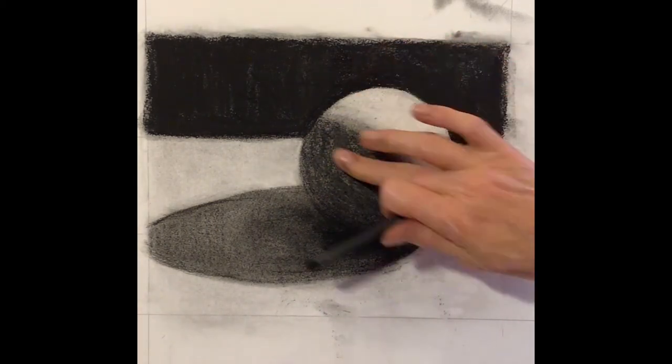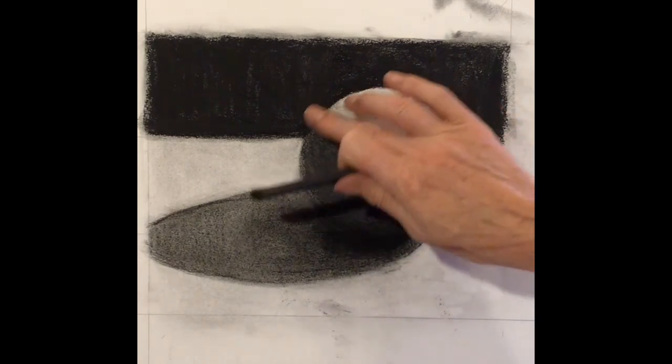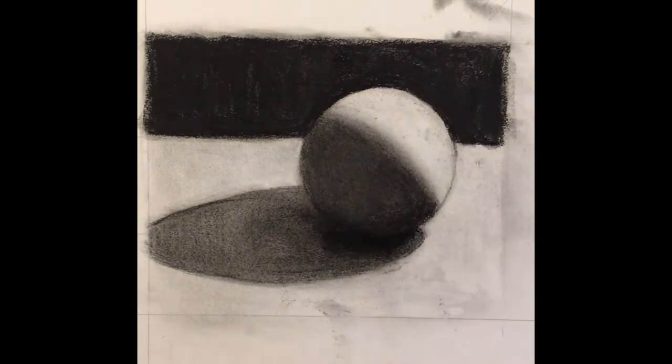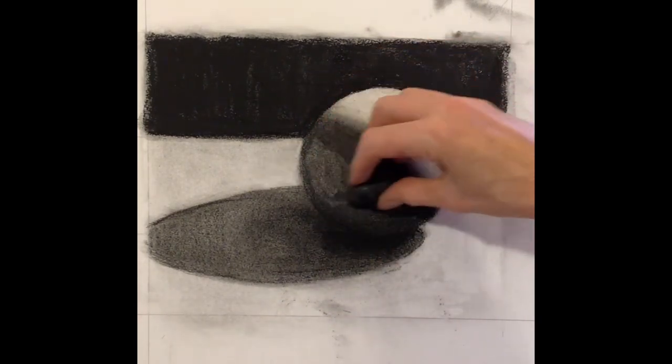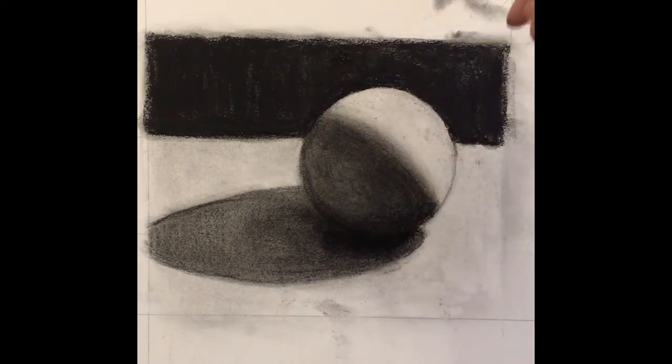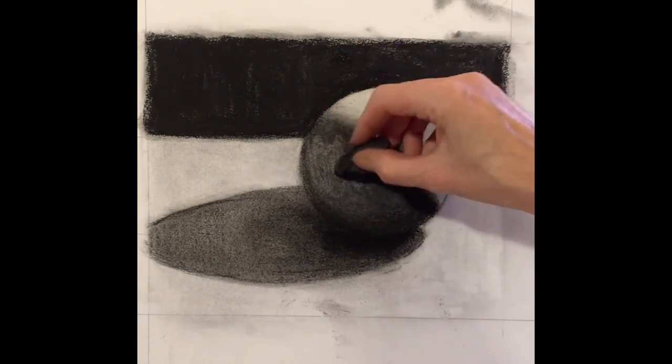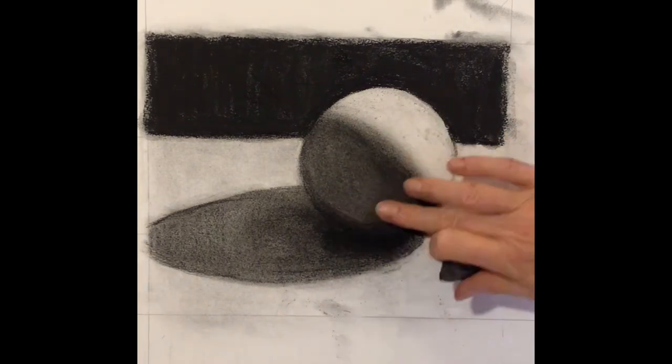I'm putting a layer of vine charcoal over the top. This is a great trick. It kind of smooths things out and then it's so easy to erase that you can easily use it to lighten areas.